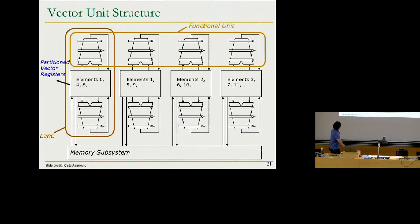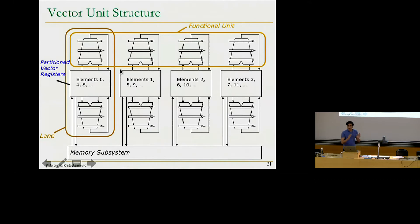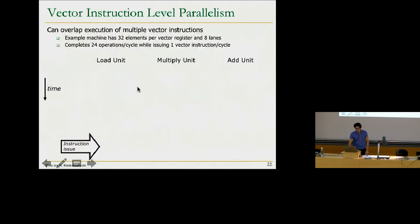This is the structure of a vector unit where each component is a lane. Each lane contains functional units—this could be the vector functional unit—and operands are stored in vector registers forming the entire register file. We partition the register file so each part is assigned to each lane: elements A0, B0, C0 go to one lane, elements 1 to the next, and so on.